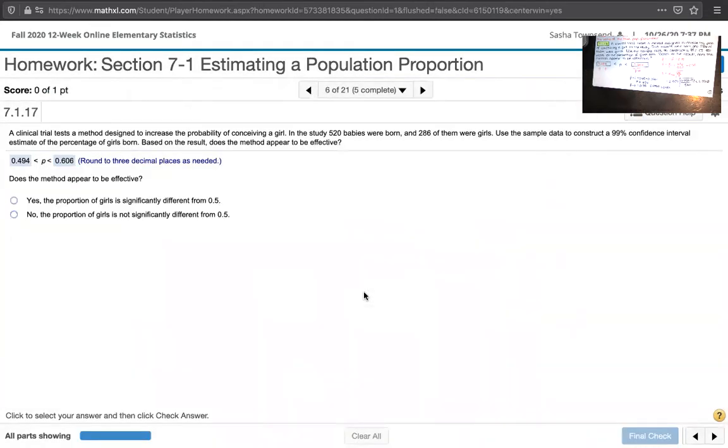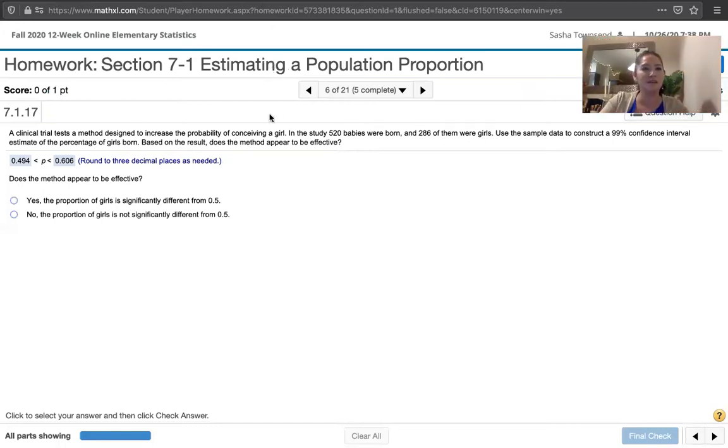Now the question says, does the method appear to be effective? Now, remember what this problem statement said. A clinical trial tests a method designed to increase the probability of conceiving a girl. So we would say that the probability of conceiving a girl without this method is 0.5. So you have a 1 in 2 chance. Either get a girl or a boy.